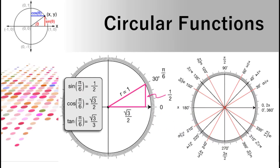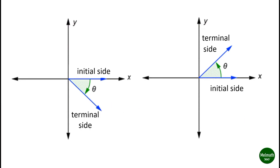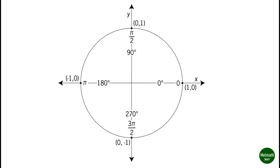In this video you will learn how to find the exact values of circular functions. To find the values of circular functions of a given angle theta, use the coordinates of the terminal point of the angle on the unit circle. Let us begin with quadrantal angles. This figure shows the points of intersection of the terminal sides of zero, pi over two, pi, and three pi over two with the unit circle.